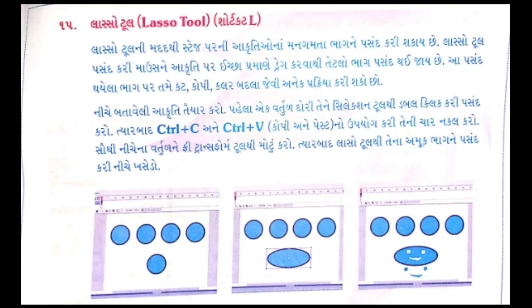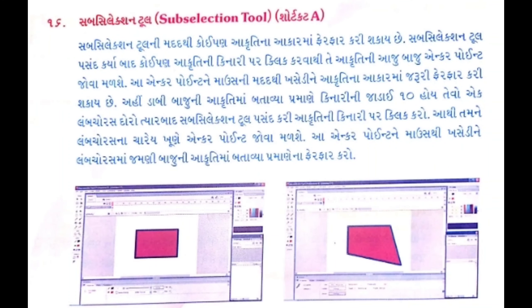ફ્રી ટ્રાન્સ્ફોર્મ ટૂલ થી આકૃતિ ને મોટું કરો. ફ્રી ટ્રાન્સ્ફોર્મ ને ક્લિક કરો. આ થી આપડે ડ્રેગ કરીને વધારે ખ્યાલ આવશે. પેજ નંબર ઉપર ફેરફાર કરી શકાય. સભ સિલેક્ટ પસંદ કર્યા બાદ, કોઈ પણ આકૃતિ ની કિનારી પર ક્લિક કરવાથી સભ સિલેક્ટ: આકૃતિ ની.